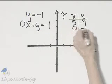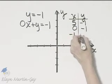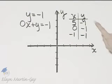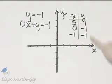So if x is 0, y is negative 1. If x is negative 1, y is negative 1. All ordered pair solutions will have a y value of negative 1.